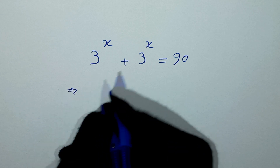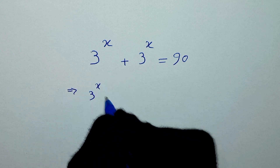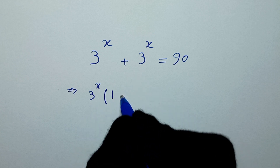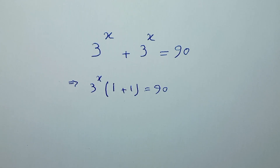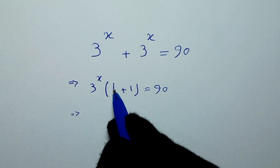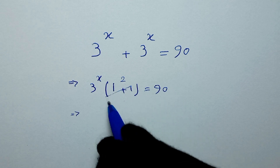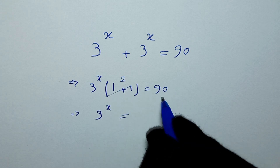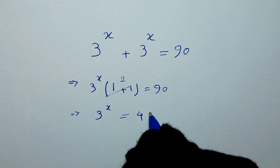In the first step we factor out 3 to the power of x. This gives us 3 to the power of x times (1 plus 1) is equal to 90. Since 1 plus 1 is 2, we divide both sides by 2, giving 3 to the power of x is equal to 45.